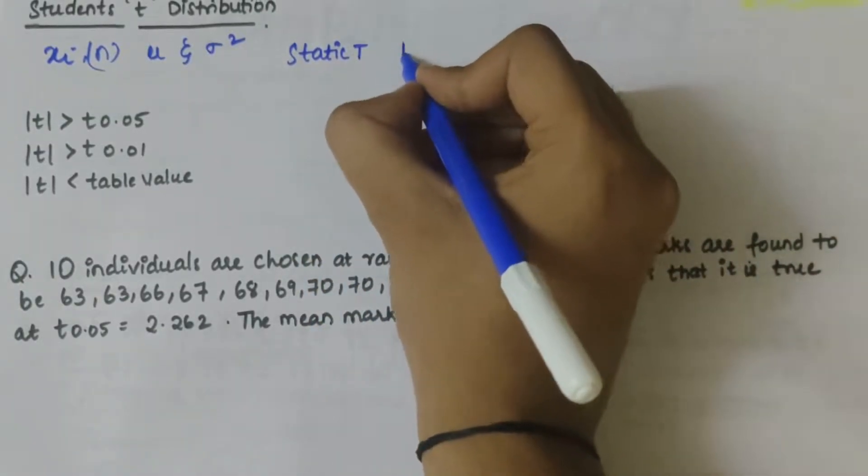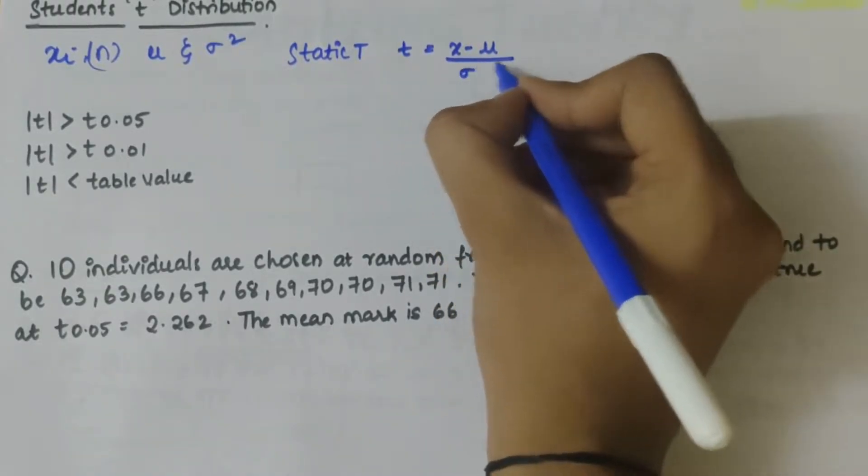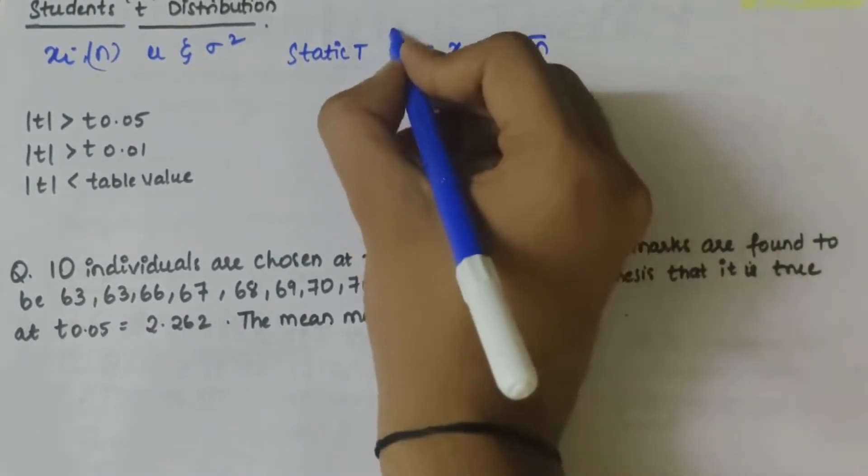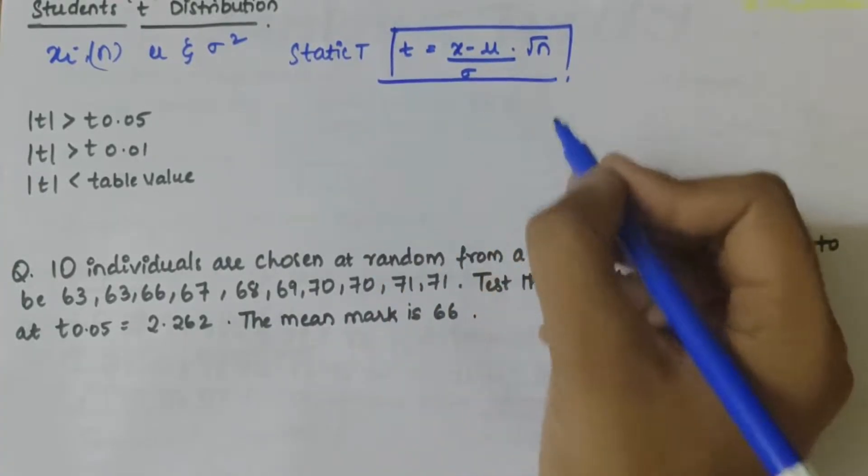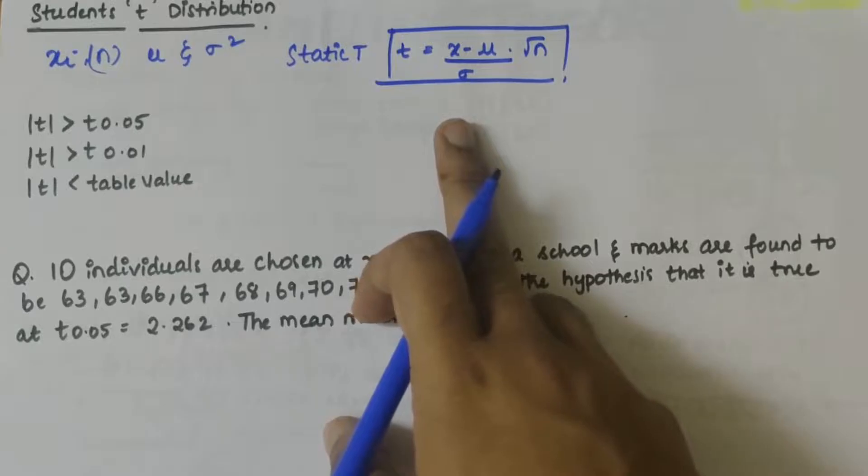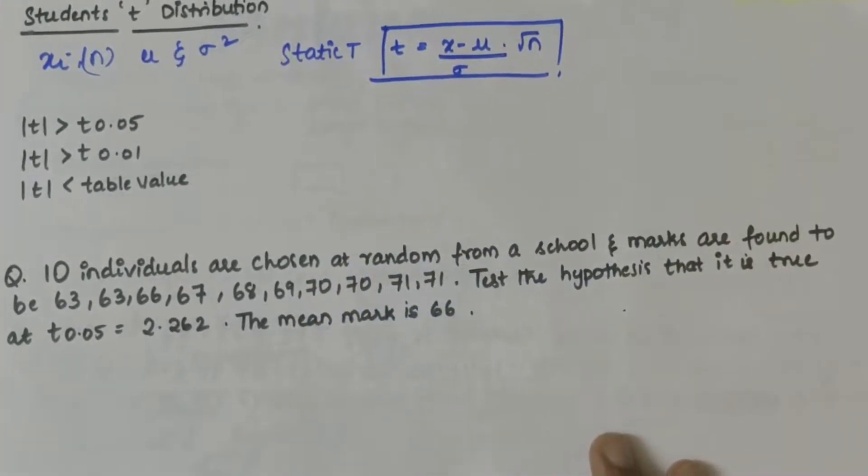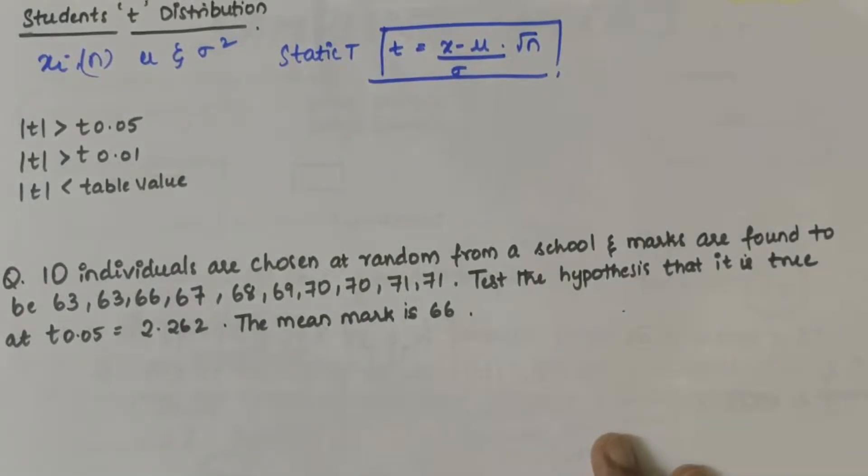Then the statistic t can be defined as t equals x̄ minus mu by sigma into root n. This is the t distribution formula. Here we need to firstly test the hypothesis whether the sample mean x̄ differs significantly from the population mean.